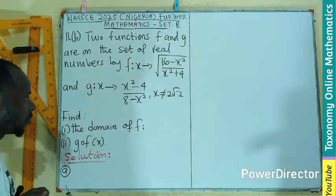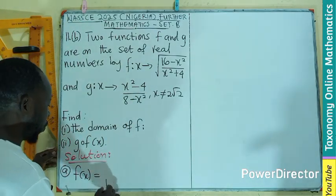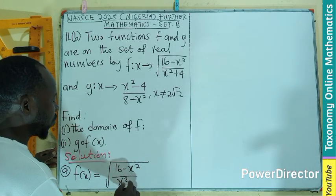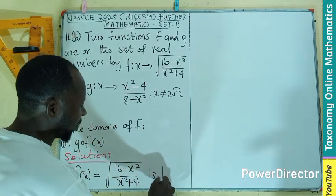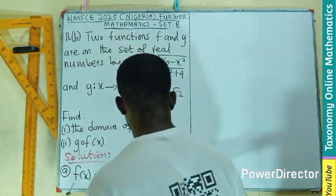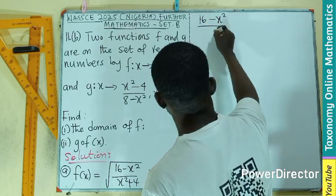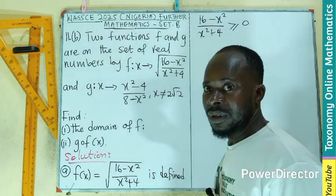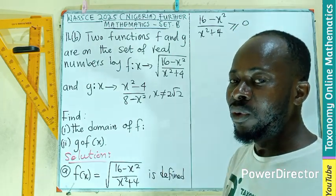The function f(x) equals the square root of (16 minus x squared) over (x squared plus 4). This function is defined when we have (16 minus x squared) divided by (x squared plus 4) greater than or equal to zero.